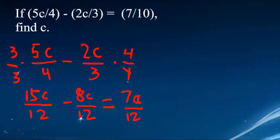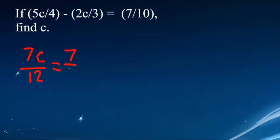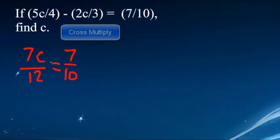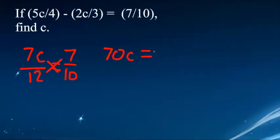And now you take the 7c over 12 and write it here. So 7c over 12 equals 7 over 10. Now you want to cross-multiply: 7c times 10 would be 70c, equals 7 times 12, which is 84.